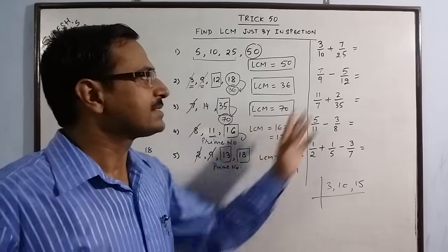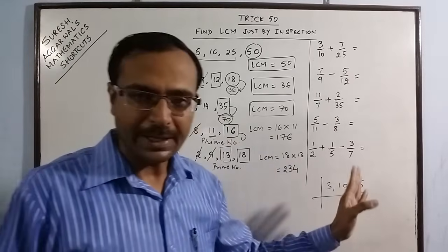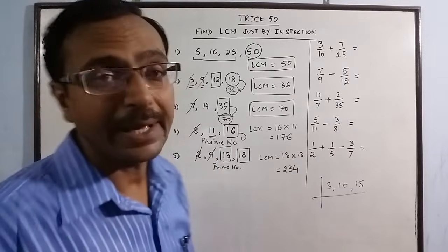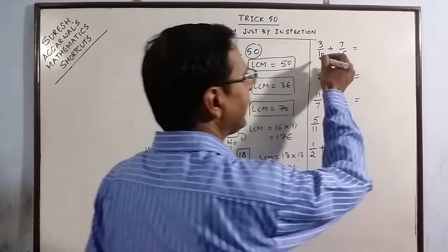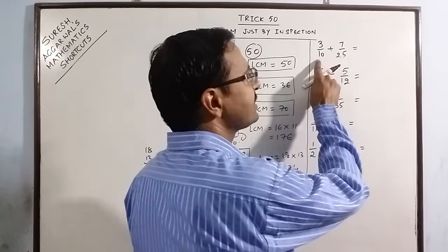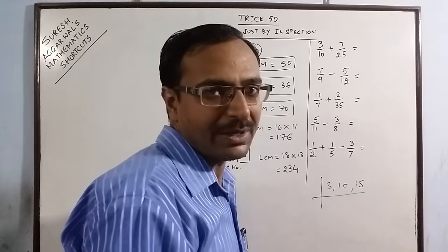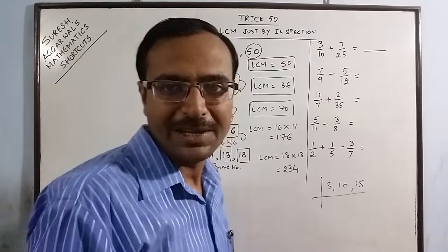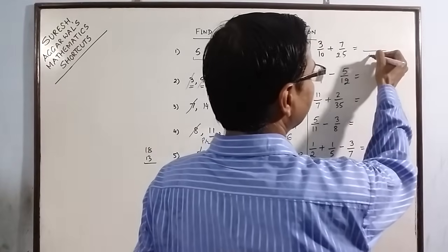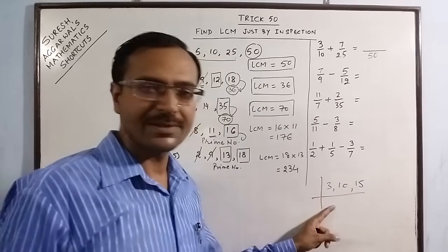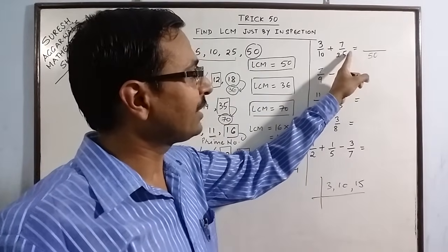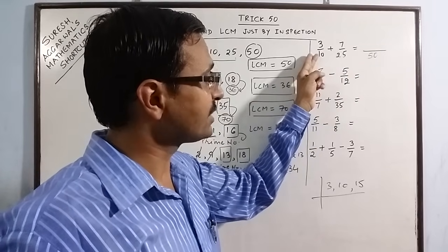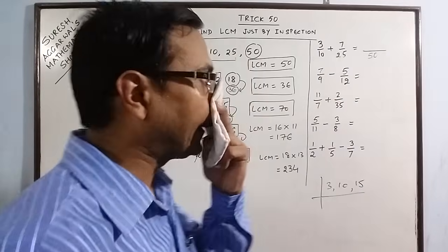How we can use this concept of LCM to find the addition and difference of rational numbers. Now see things become so easy when we know the LCM orally. Now here 10 and 25. 10 is not a factor of 25. So we write the multiples of 25. 25 twos are 50. 10 divides 50. So 50 is the LCM. No need to write this, just take the multiples of 25 and the multiple which exactly comes in the table of 10 is the LCM.